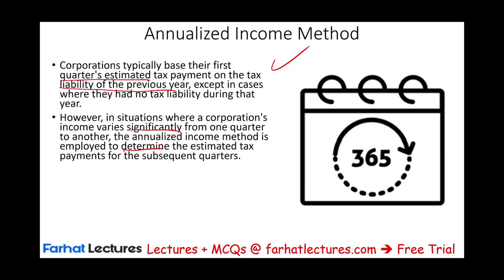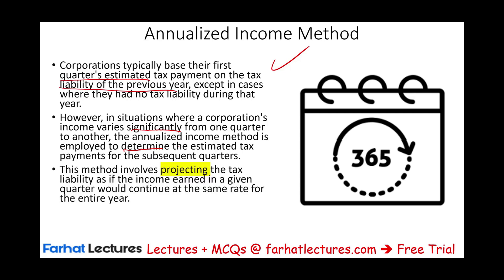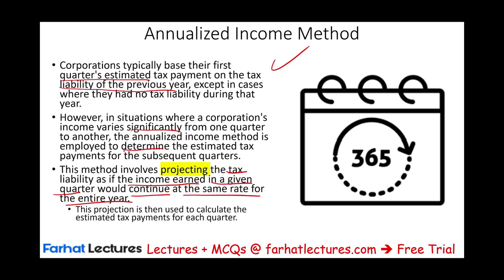Because your income could go up or down, you don't want to pay more or less in estimates than necessary for that particular quarter. So you would use this annualized income method. This involves projecting and estimating the tax liability based on income earned in a given quarter, with the assumption that this earning would continue at the same rate for the entire year. This projection is then used to calculate the estimated tax payment for each quarter.